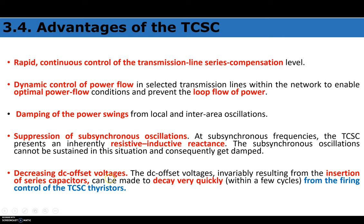Another advantage is decreasing DC offset voltages. When only a fixed capacitor is in the operating mode, it produces DC offset voltage. TCAC decreases this DC offset voltage — the offset invariably resulting from insertion of series capacitors can be made to decay very quickly within a few cycles through the firing angle control of the TCAC thyristor. The thyristor controlled reactor can be switched on immediately to damp those DC offset voltages produced by the fixed capacitor.